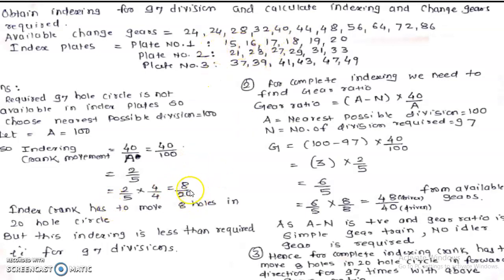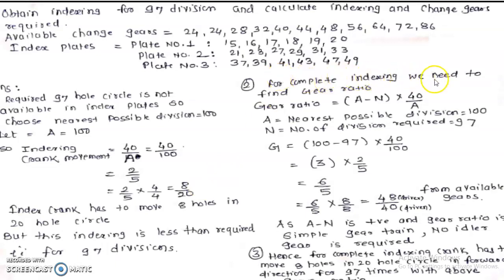The answer is 8/20: the index crank has to move 8 holes in a 20-hole circle. However, this indexing is for the assumed number of divisions (100), which gives less movement than required for 97 divisions. Therefore, an additional gear train mechanism is needed. The second step is to find the gear ratio.